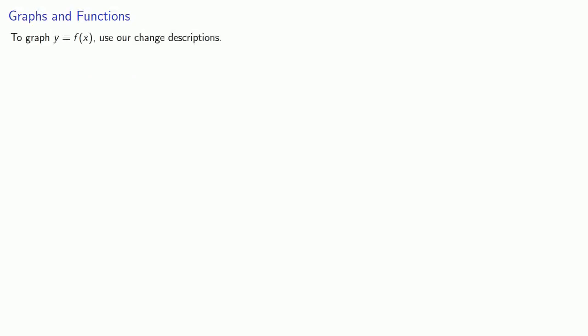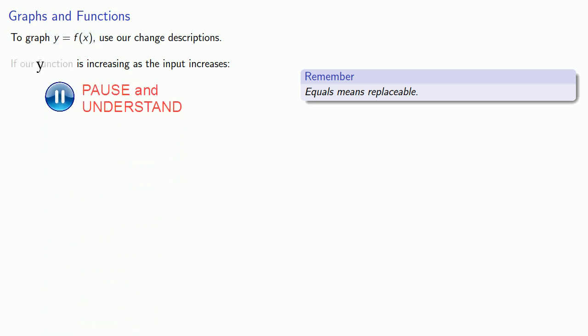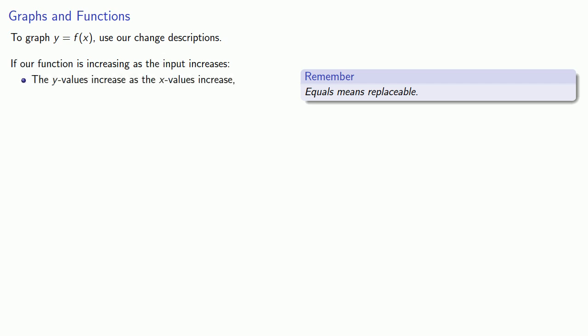So what about our graphs? To graph y equals f of x, we'll use our change descriptions. Remember, equals means replaceable. Our function is f of x, and f of x is y, so anything we say about the function is something we can say about y. The input is the x value, so anything we say about the input is something we can say about x.